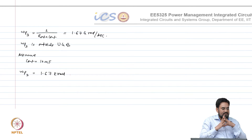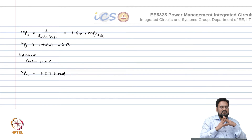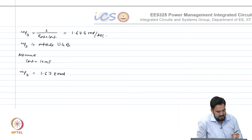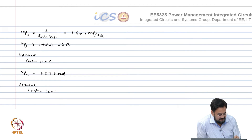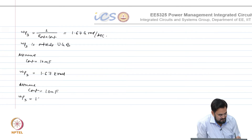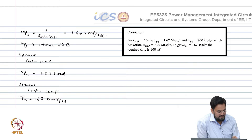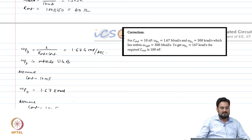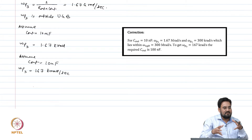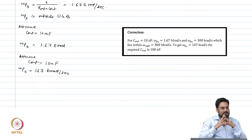But if I assume 10 nano farad, omega P3 will be 1000 times of 167 kilo radian, and omega P2 is at 300 kilo radian. So now both poles are pretty close to each other. You have a second-order system which needs to be compensated.